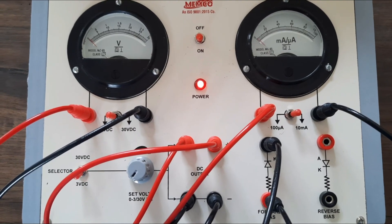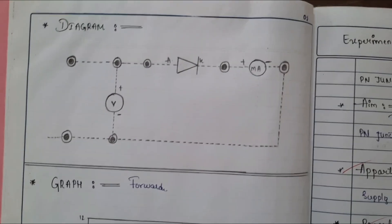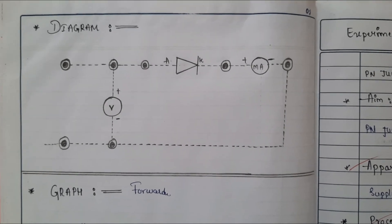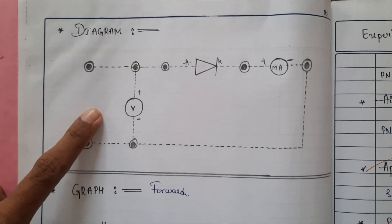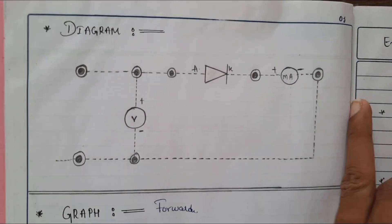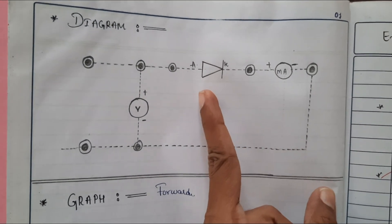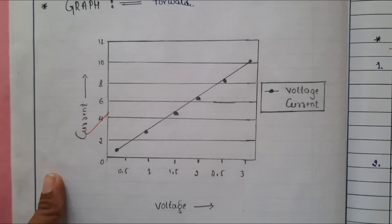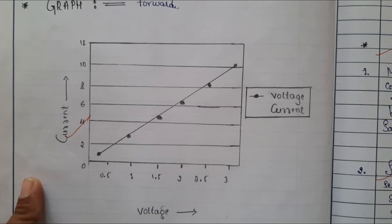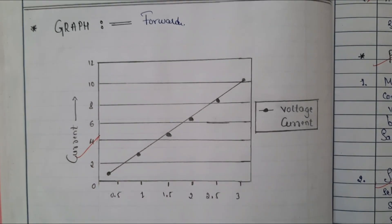Then we can go for reverse bias — PN junction in reverse bias. Here is the circuit diagram for PN junction in forward bias. The voltmeter is connected across the diode and between the ammeter we connect the PN junction, with this being the anode and cathode — positive and negative terminals of the PN junction. Here is the nature of the graph to study the IV characteristics of a PN junction: current versus voltage, which must be a straight line.